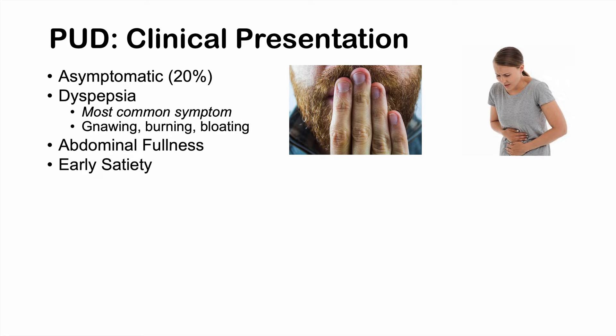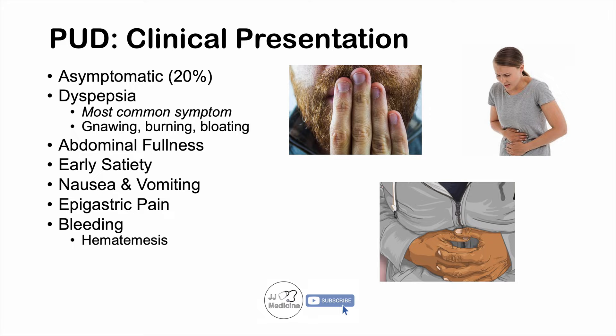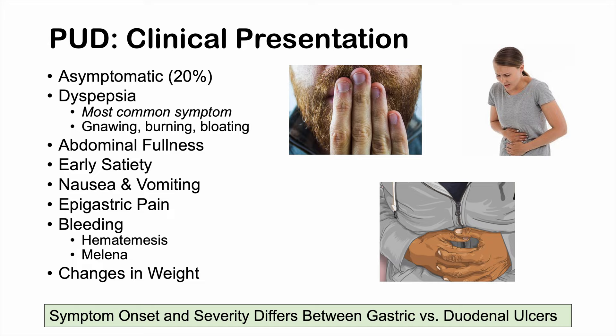Nausea and vomiting can also be symptoms, although they are more uncommon. Bleeding can occur and lead to hematemesis — vomiting up blood — as well as melena, which is dark black tarry stool, or hematochezia, which is red bloody stool. Weight changes can also occur — either weight loss or weight gain depending on the type of ulcer. Symptom onset and severity differ between gastric and duodenal ulcers.